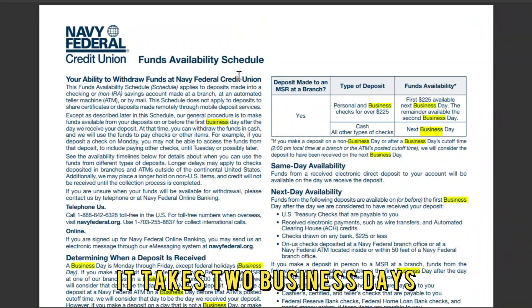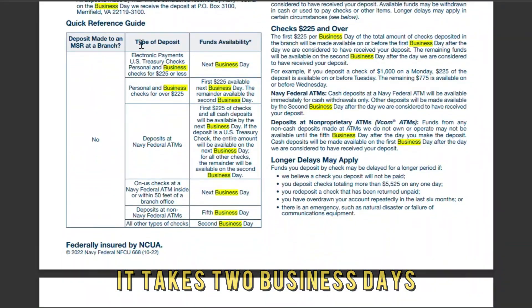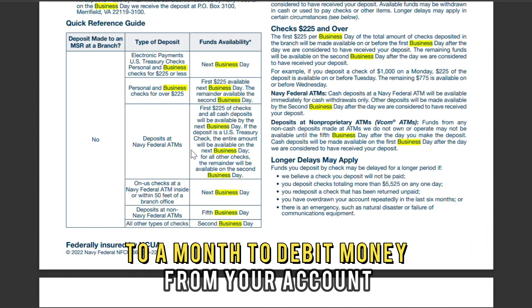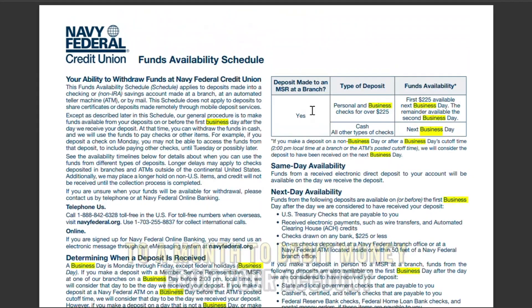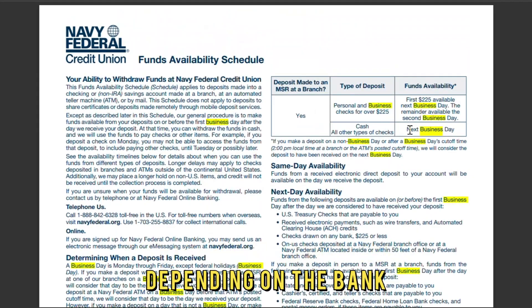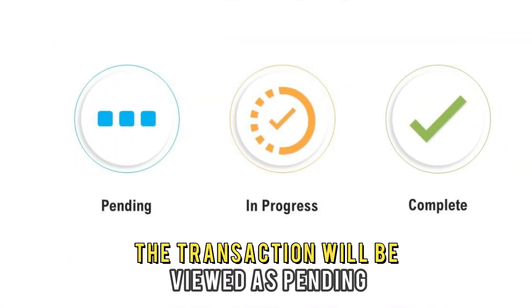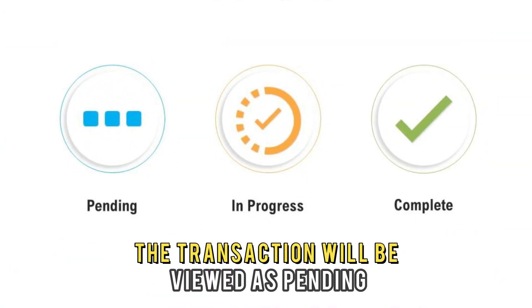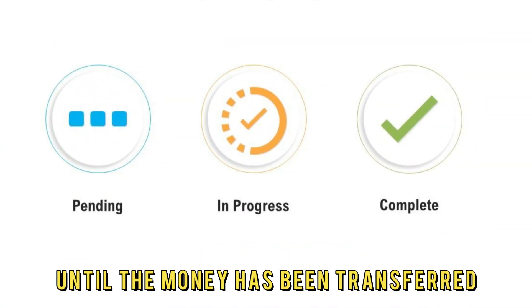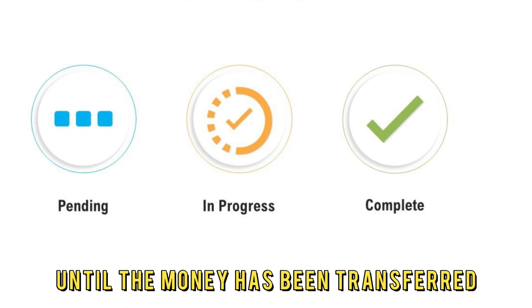It takes two business days to a month to debit money from your account depending on the bank. The transaction will be viewed as pending until the money has been transferred.